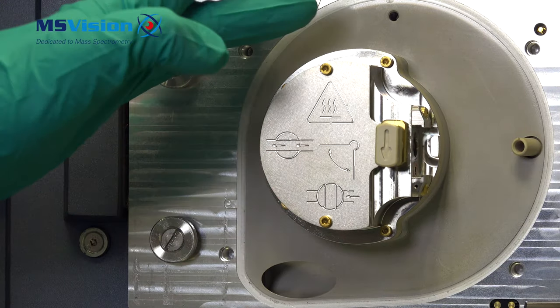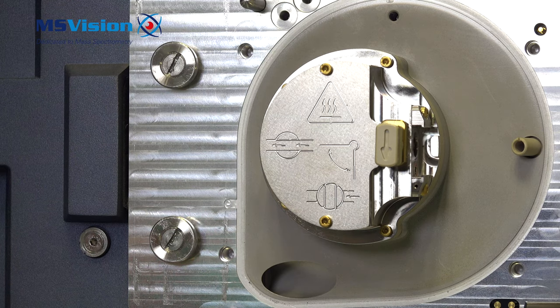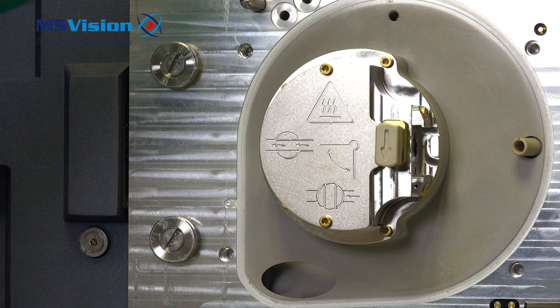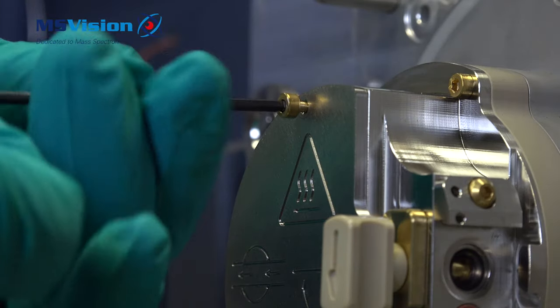Ensure that the source block has cooled down as it can be very hot before we can remove the source. For safety please take out the mains power lead. We can now open to show the heater and remove the source block.